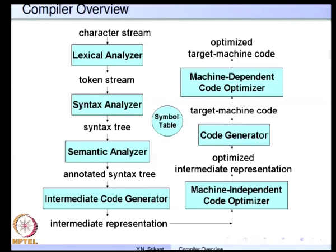Now we zero in on the compiler itself. A compiler consists of many blocks: the lexical analyzer is the first one, its output goes to a syntax analyzer, then a semantic analyzer, followed by the intermediate code generator, the machine-independent code optimizer, the machine code generator, and finally the machine-dependent code optimizer. All these parts of a compiler use a data structure called a symbol table.